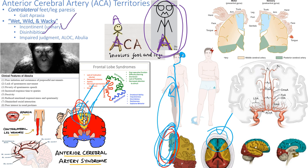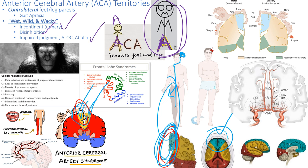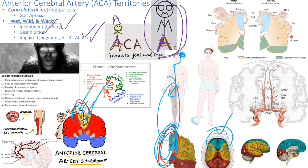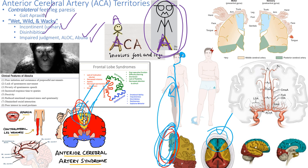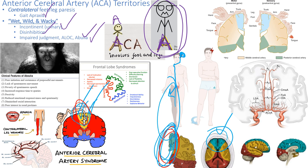They get disinhibition and impaired judgment. And also they kind of don't want to move — they get very withdrawn. That's called abulia — an inability to want to move. And they have gait apraxia — they know how to walk, but when they walk, they walk like a toddler. Apraxia means they're not doing something they should know how to do. So they have contralateral feet or leg paresis.